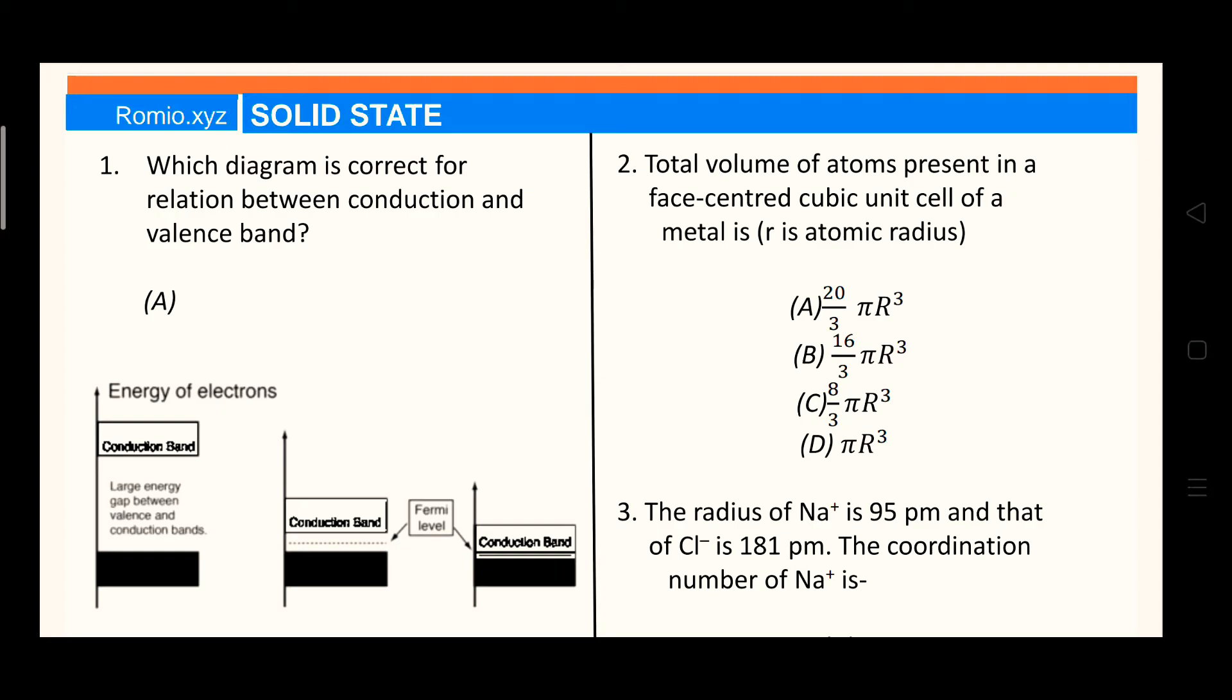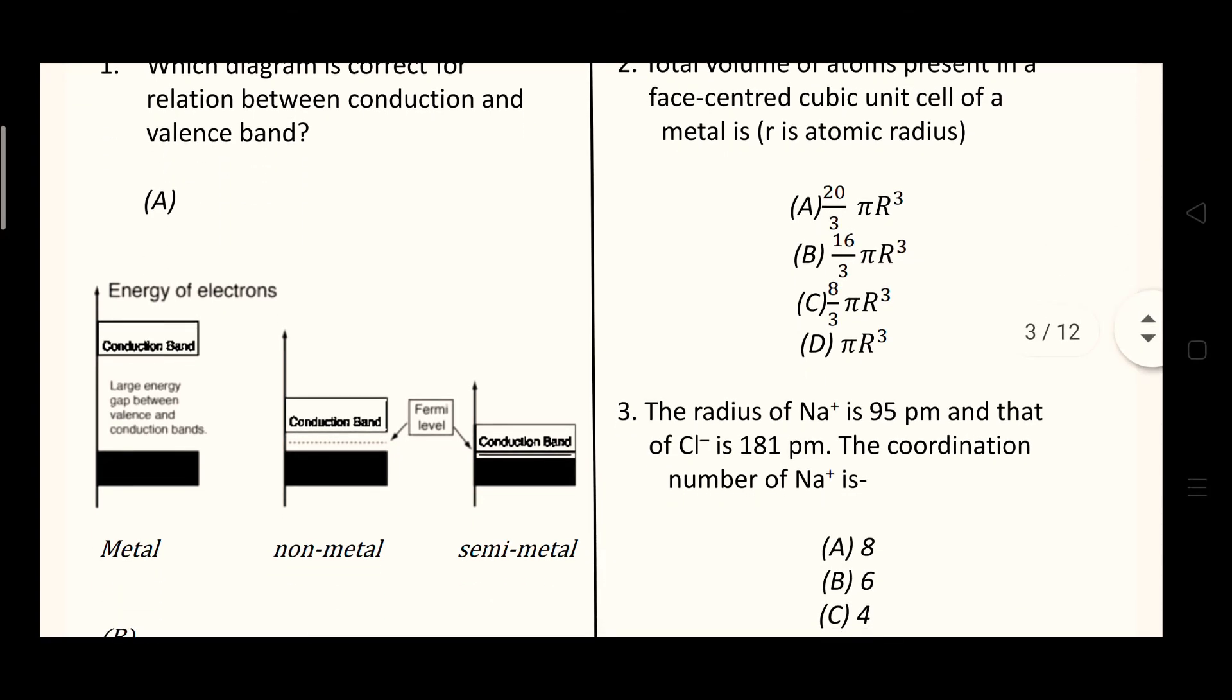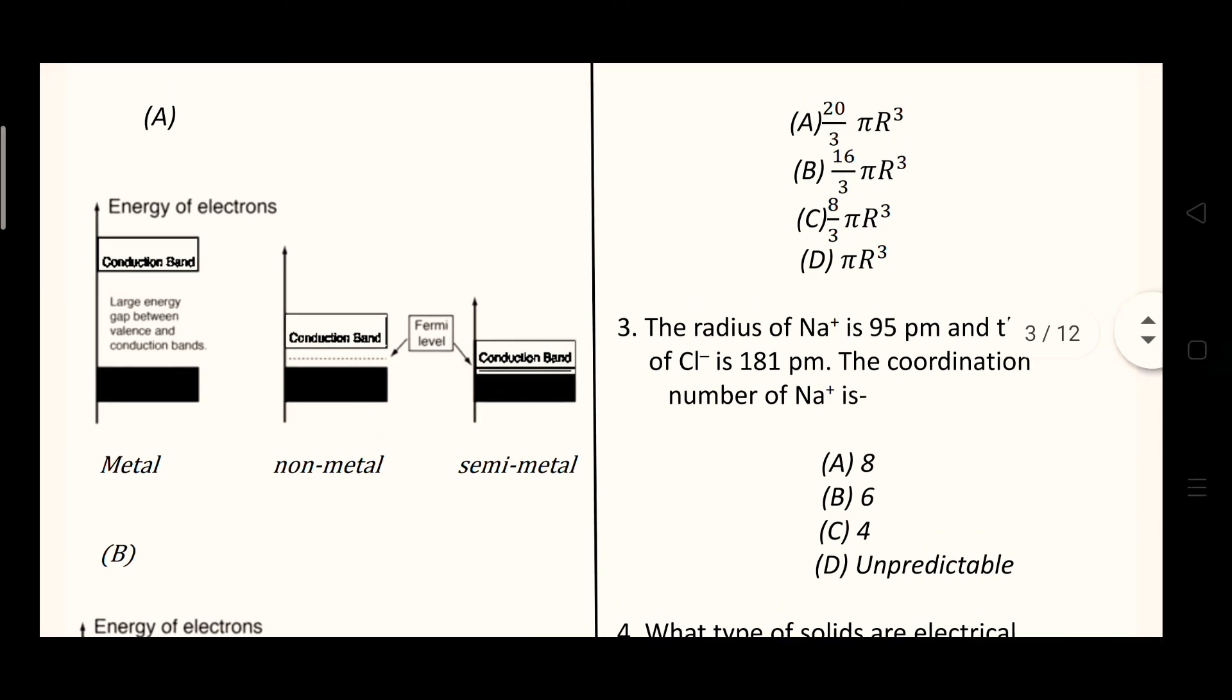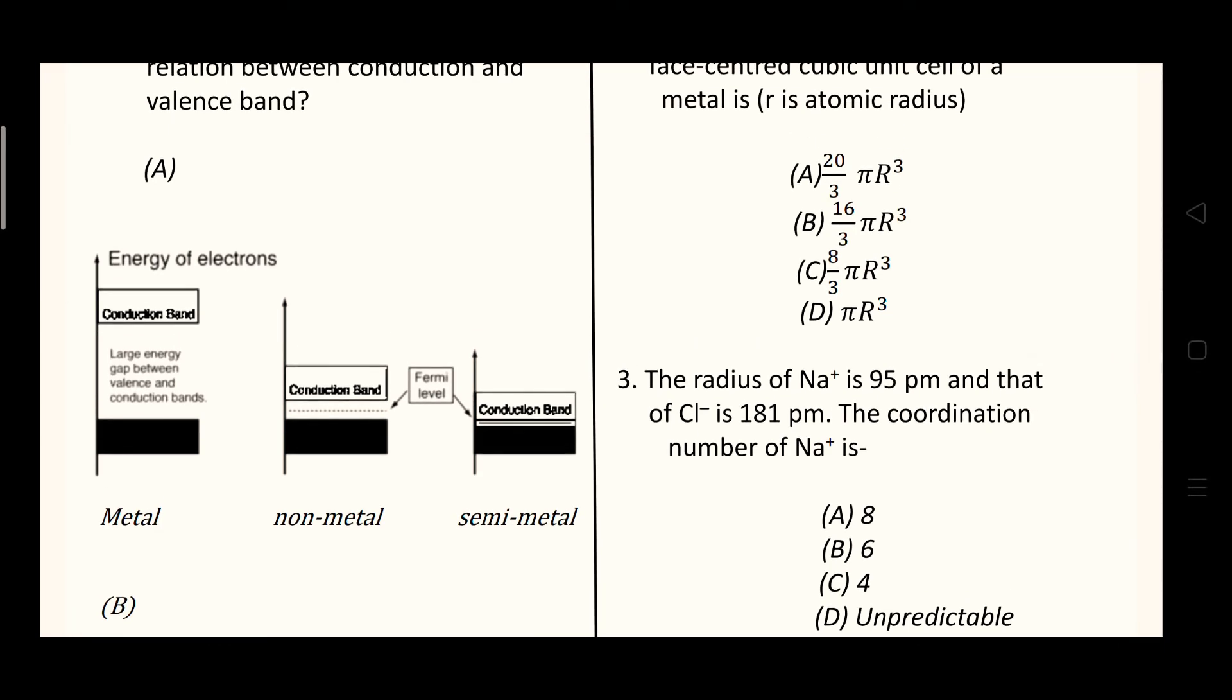Which is the right answer here? Can you tell me? Which is the best answer for conduction and valence? First is metal, second is conductor/insulator/semiconductor, third one is insulator/semiconductor/conductor.